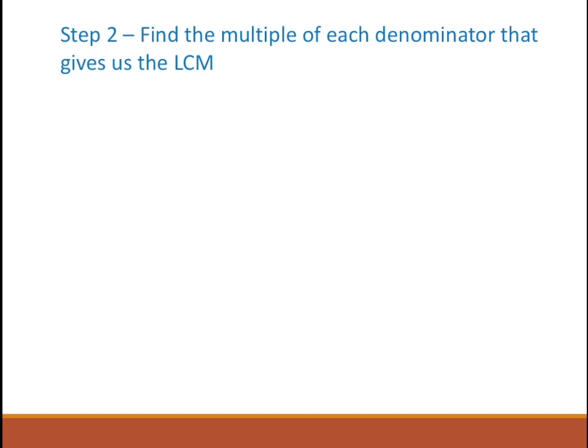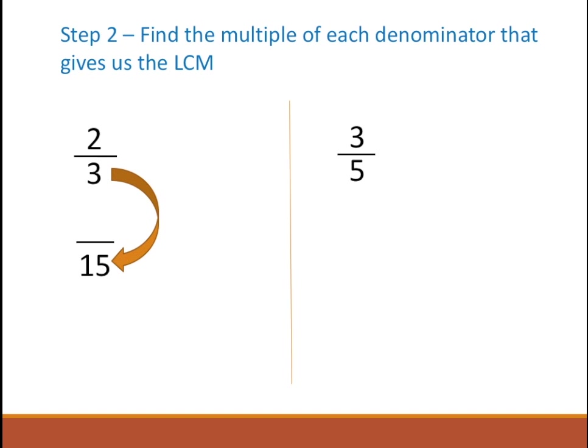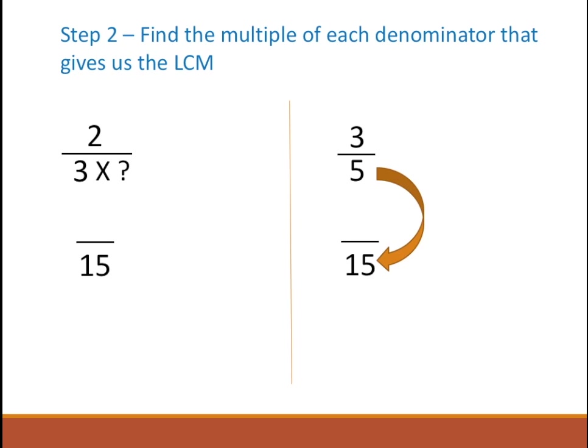In step 2, we find the multiple of each denominator that gives us the LCM. Going back to 2 by 3 and 3 by 5, I want the denominator to be 15, which is the LCM of 3 and 5. So how do I get from 3 to 15? And how do I get from 5 to 15? I have to multiply the denominator 3 with some value to get 15, and 5 has to be multiplied with some value to get 15.